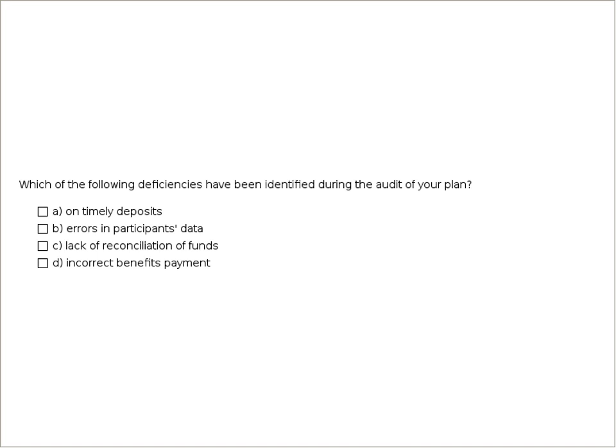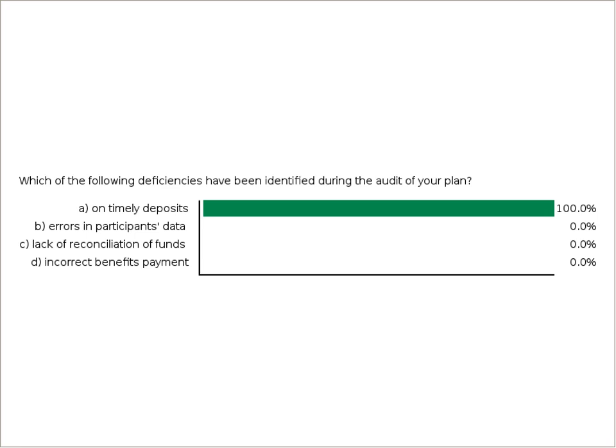Polling question three asks which deficiencies have been identified during the audit of your plan: timely deposits, errors in participant data, lack of reconciliation of funds, or incorrect benefit payments. Results confirm that the most common deficiency is related to timely deposits, with 88.9% of respondents identifying this. Errors in participant data and lack of reconciliation of funds are both tied at 12.5%. We will be discussing these types of deficiencies later in the presentation.